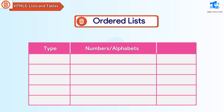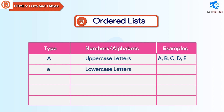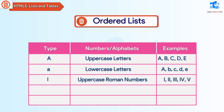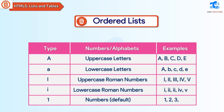The type attribute table shows: Type 'A' — Alphabets, Uppercase Letters — Examples: A, B, C, D, E. Type 'a' — Alphabets, Lowercase Letters — Examples: a, b, c, d, e. Type 'I' — Numbers, Uppercase Roman Numerals — Examples: I, II, III, IV, V. Type 'i' — Numbers, Lowercase Roman Numerals — Examples: i, ii, iii, iv, v. Type '1' — Numbers, Default — Examples: 1, 2, 3, 4, 5.